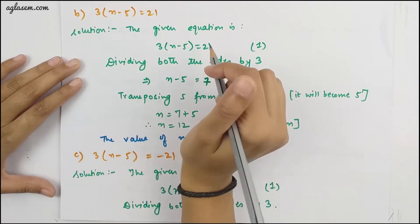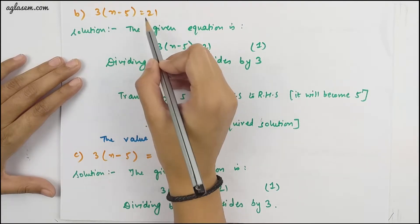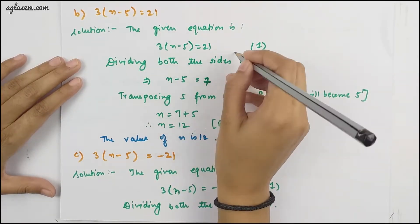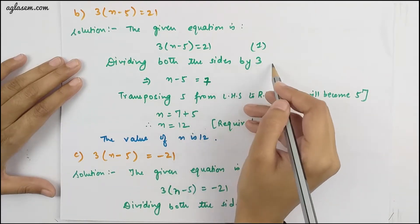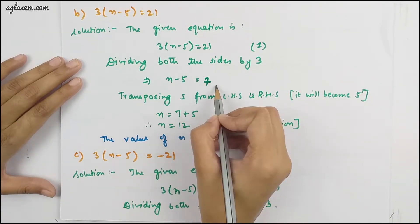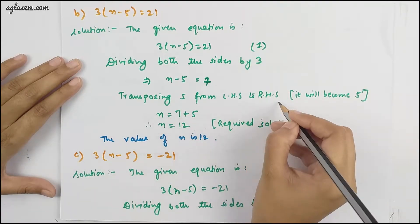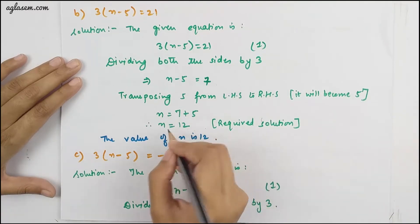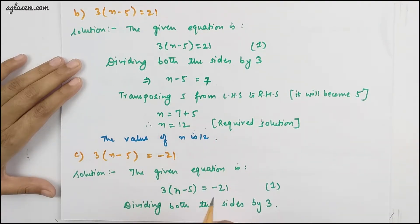The B part is 3n − 5 = 21. Dividing both sides by 3, we get n − 5 = 7. Transposing 5 from LHS to RHS, it becomes +5. From there, we have the value of n = 12.